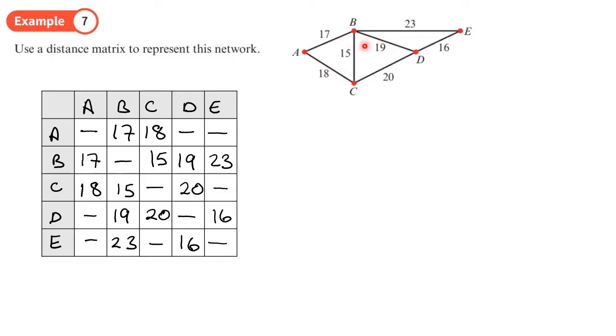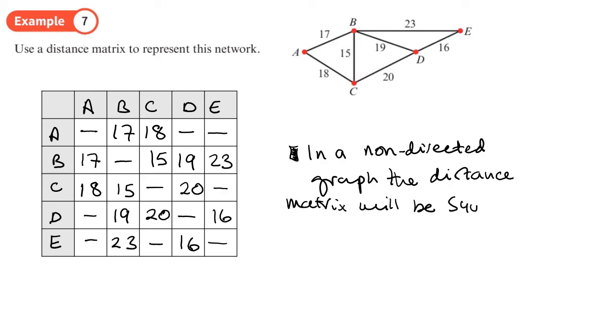So if your graph isn't directed, then this will be symmetrical. I think we mentioned it at the start, but we'll mention it now. That will save time. So in a non-directed graph, the distance matrix will be symmetrical along the leading diagonal. So that is this line here. And you can see that there's all dashes along that line as well, but it's symmetrical. That's the line of symmetry.